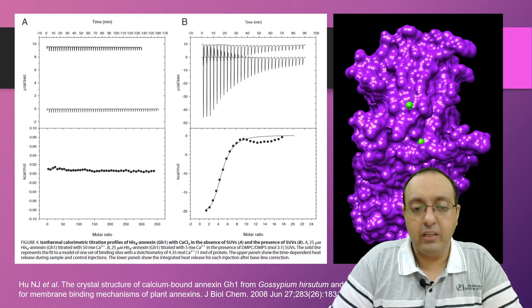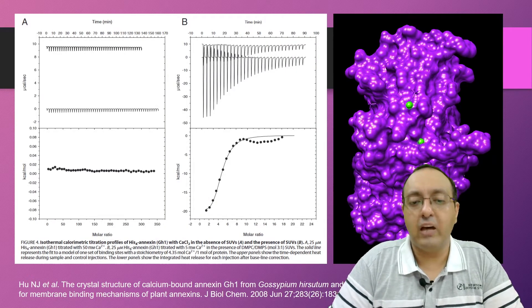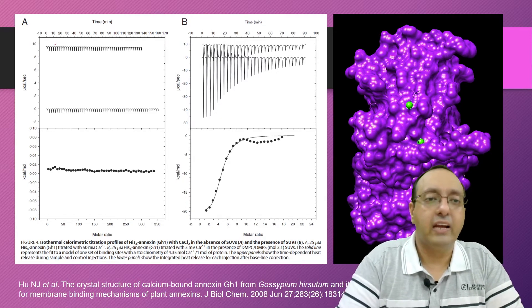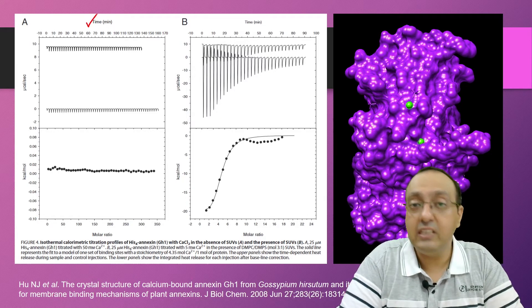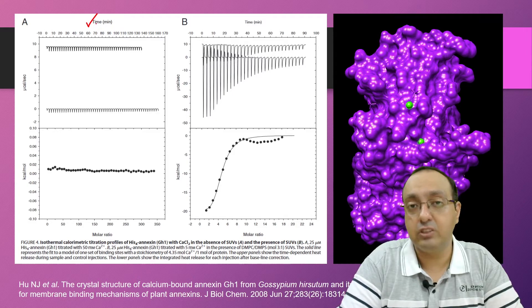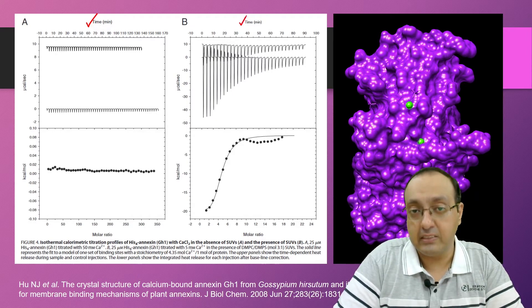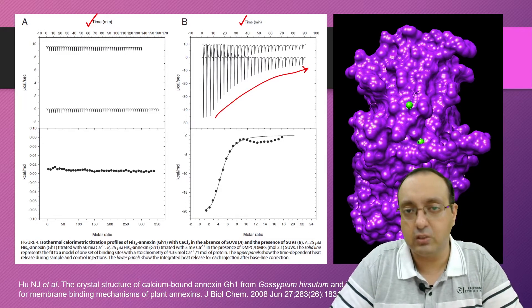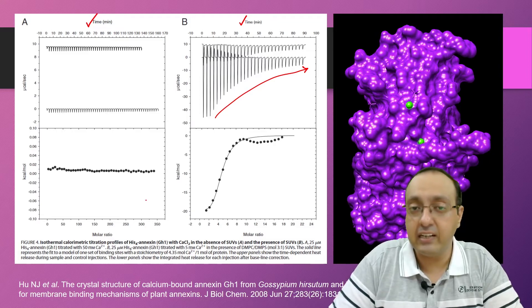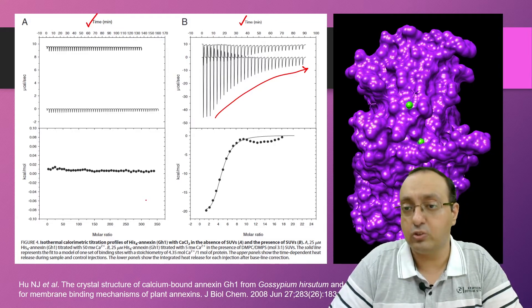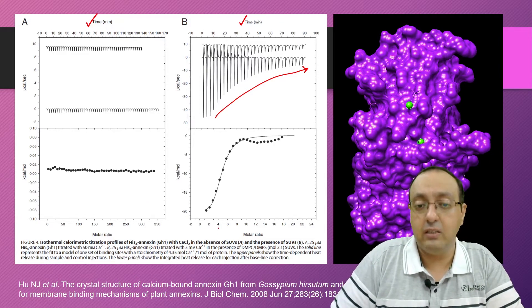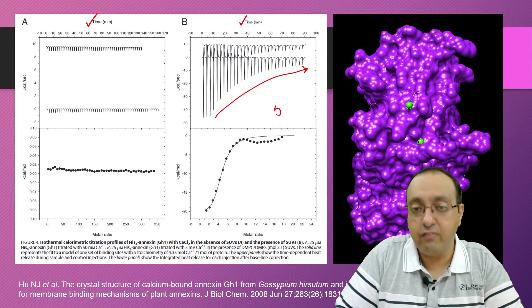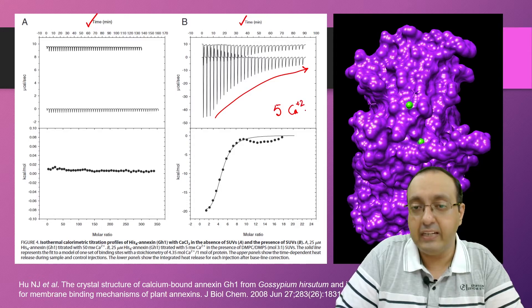In another example, they looked at calcium-bound annexin protein from cotton, and here also they are looking at the ITC profile without the substrate and vesicles which they bind, and in the presence. They are getting this nice profile when they add different amounts of concentrations of ligands, and they can integrate that data and get an idea about the stoichiometry. They also got the molar ratio where they found out that actually it is five calcium ions which are binding to this protein.